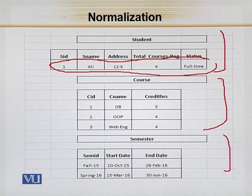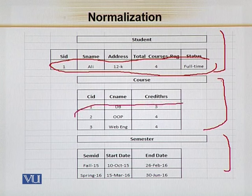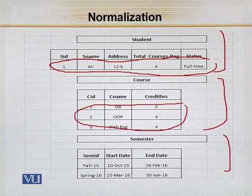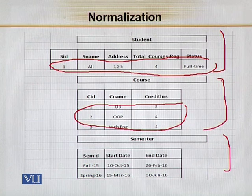और ऐसा group जिसके अंदर multiple rows मौजूद हो — likewise, जो course का table है, इसके अंदर देखें, हमारे पास 3 rows मौजूद हैं, और जो semester का table है, इसके अंदर हमारे पास 2 rows मौजूद हैं. तो जो student का group है वो non-repeating group है, और जो course और semester का group है वो repeating group है. तो यह basically repeating group and non-repeating group की definition है.